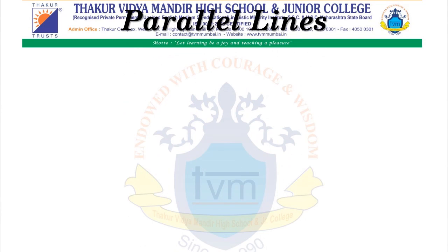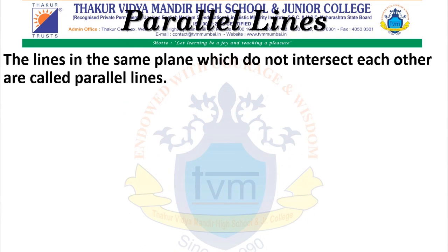What are parallel lines? The lines in the same plane which do not intersect each other are called parallel lines. If the lines do not meet each other, then those lines are called parallel lines. Let's see an example.